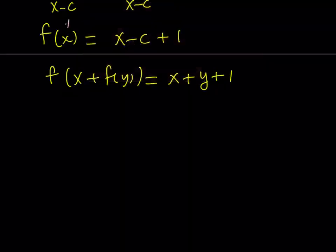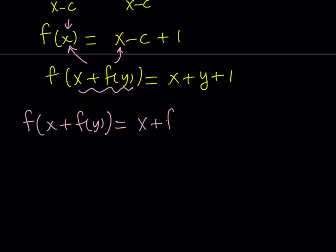So I can just go ahead and substitute. So since I know the expression for f of x, in other words, we're replacing x with this on both sides. So that we can get f of this. So f of x plus f of y. I hope you don't misunderstand. It's not f of x plus f of y, but f of the quantity x plus f of y. So it's going to be equal to x plus f of y on the right hand side minus c plus 1. And we also know that this is equal to x plus y plus 1.